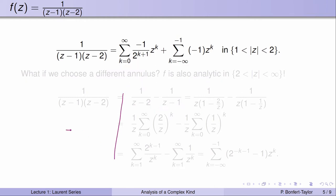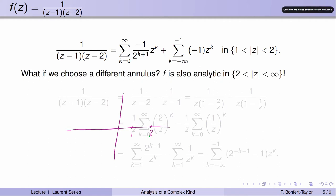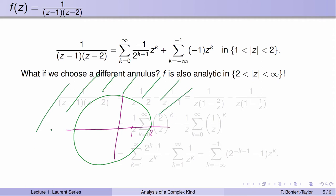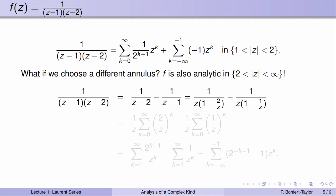Here again is the picture of where the function is analytic — everywhere except the points 1 and 2. In the first example we chose an annulus between those two points, 1 and 2. What if I chose a different annulus? We notice that f is also analytic where |z| is greater than 2. So I could look at the annulus where the outside component is unbounded — that's also considered an annulus, and f is analytic there as well. So in that annulus, f must have a Laurent series expansion too.